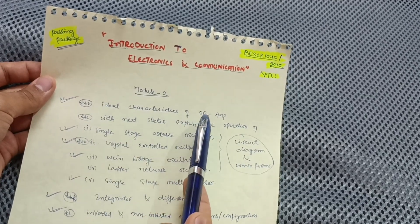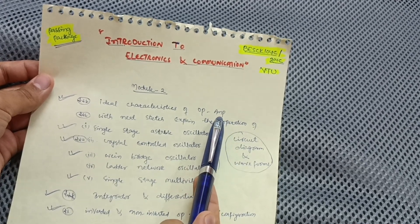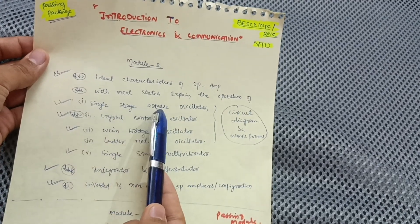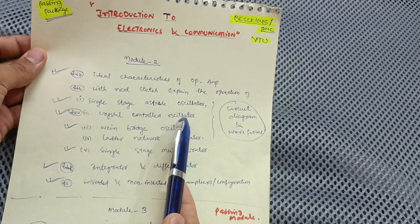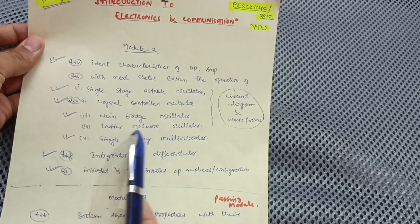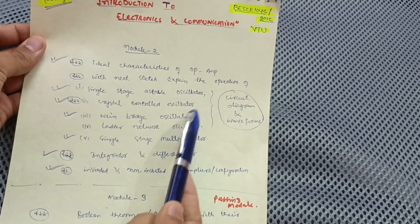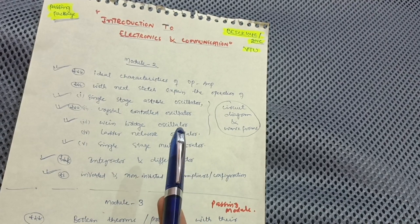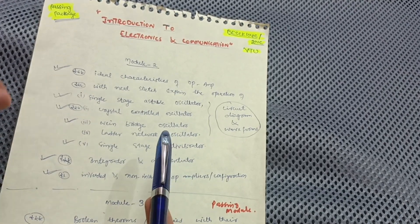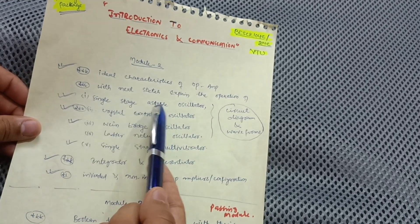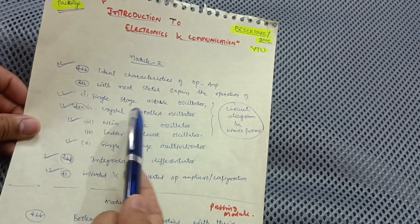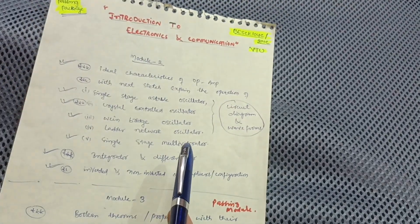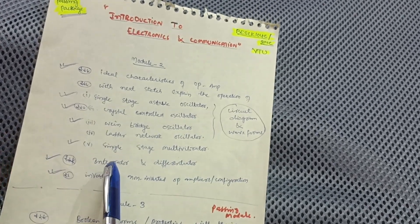In Module 2, you have to cover important questions like ideal characteristics of an op-amp (operational amplifier) parameters. Then, with neat sketches, explain the operation of single-stage stable oscillator, crystal controlled oscillator, Wien bridge oscillator, ladder network oscillator, and single-stage multivibrator. Among these five, definitely one or two will appear in the examination. Focus especially on single-stage stable oscillator and crystal controlled oscillator.